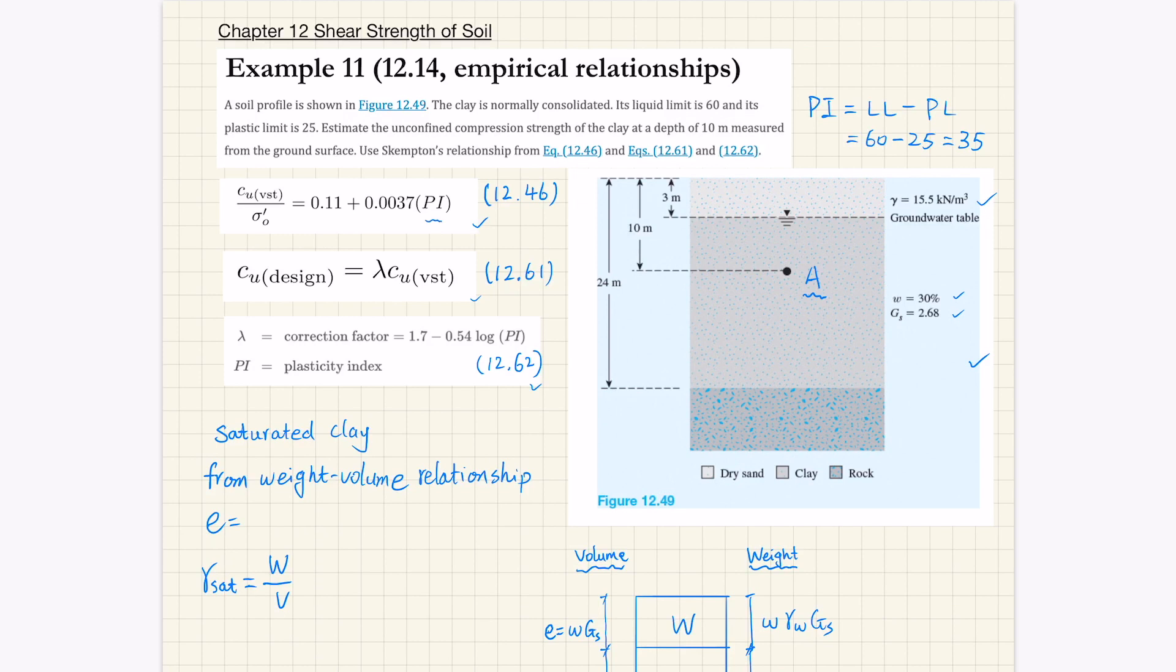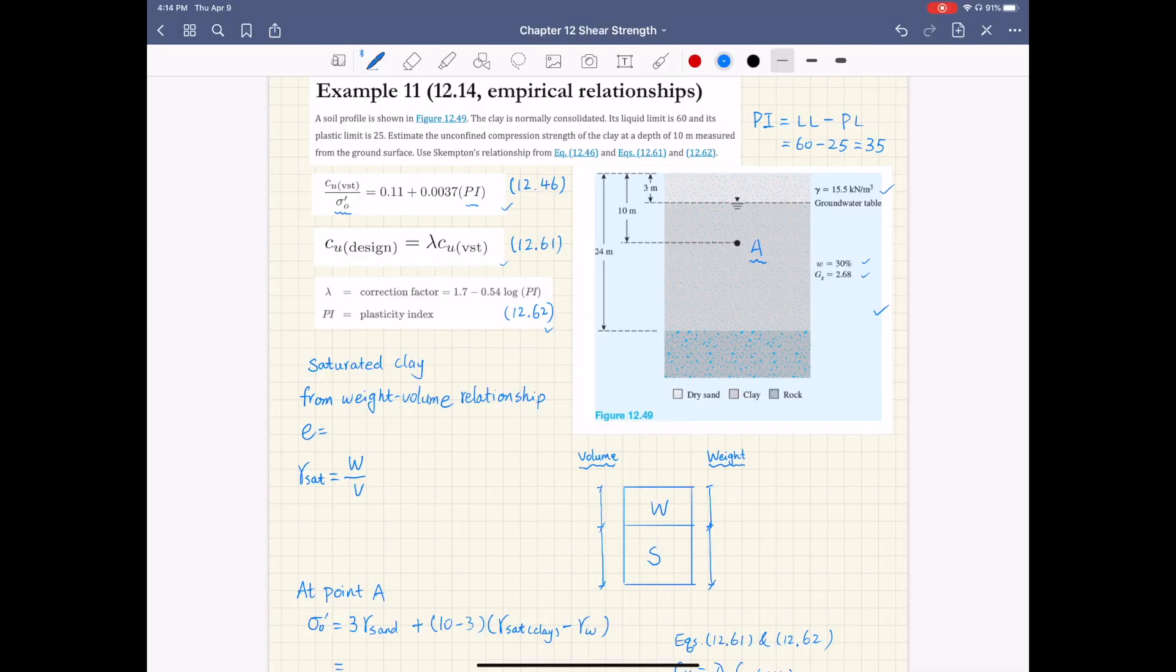To use Scanton's relationship, we need to know the effective stress, the overburden effective stress at this point A. To calculate the effective overburden pressure sigma naught prime at point A, we need to know the unit weight of the sandy soil, which is provided, and also the unit weight of clay. For clay, we're given moisture content and specific gravity, so we can use the phase diagram and the weight-volume relationship to figure out the unit weight of clay.